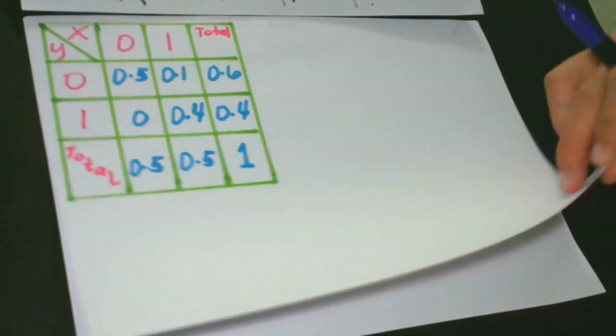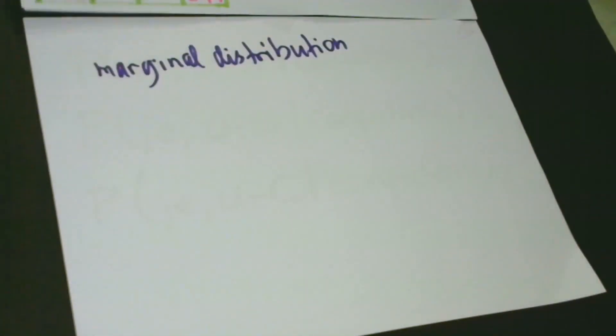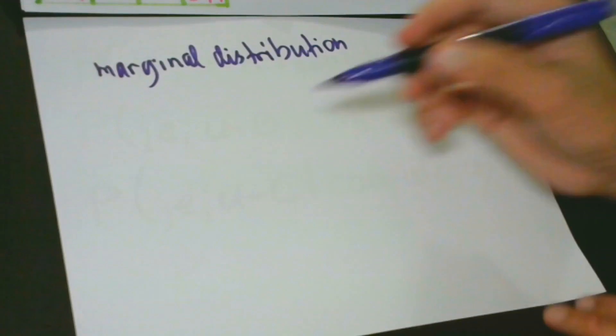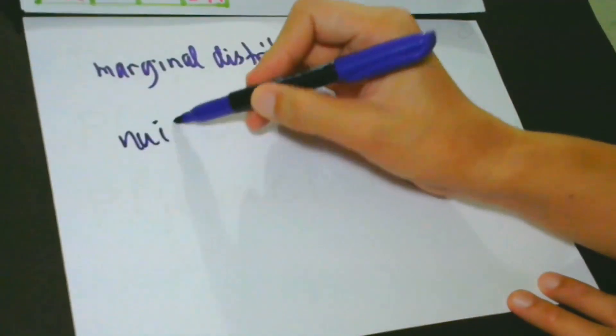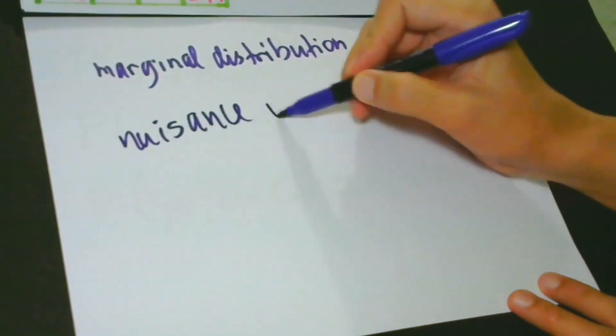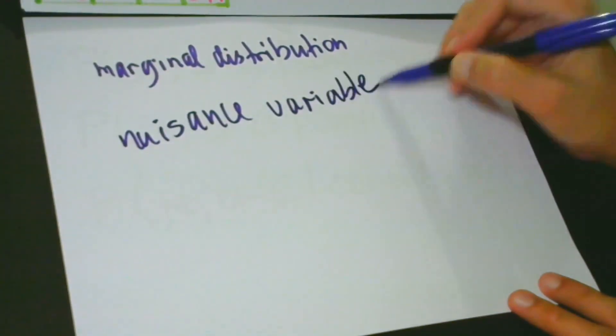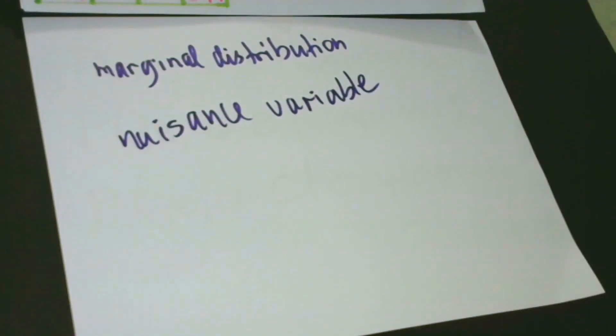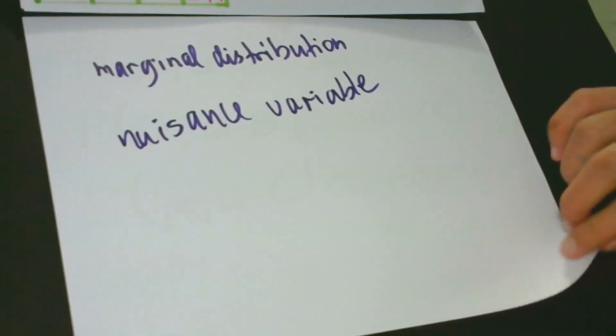Another thing that we have to remember is integrating out a nuisance variable. For better understanding of a nuisance variable, let's have this example.